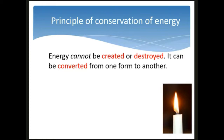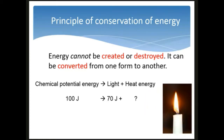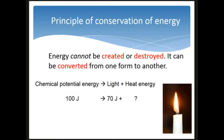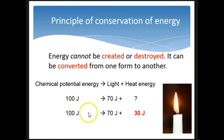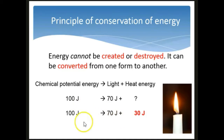The conservation of energy — COE — says energy cannot be created or destroyed; it can only be converted from one form to another. The amount of energy in our universe is fixed, meaning it remains the same. For the burning candle: if a candle provides 100 joules of chemical potential energy and 70 joules is converted to light energy, then 30 joules of heat energy is created. The 100 joules cannot be destroyed; it is conserved — converted to 70 joules of light and 30 joules of heat.